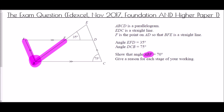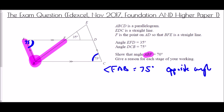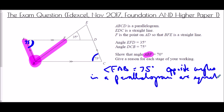First, I'll mark the angle I'm looking for: ABF means start at A, move to B, and go to F — that's the angle between AB and BF. We need to use all our rules: parallel lines, quadrilaterals, triangles, and angles on straight lines. Since ABCD is a parallelogram, opposite angles are equal. So angle FAB equals 75 degrees. Reason: opposite angles in a parallelogram are equal.